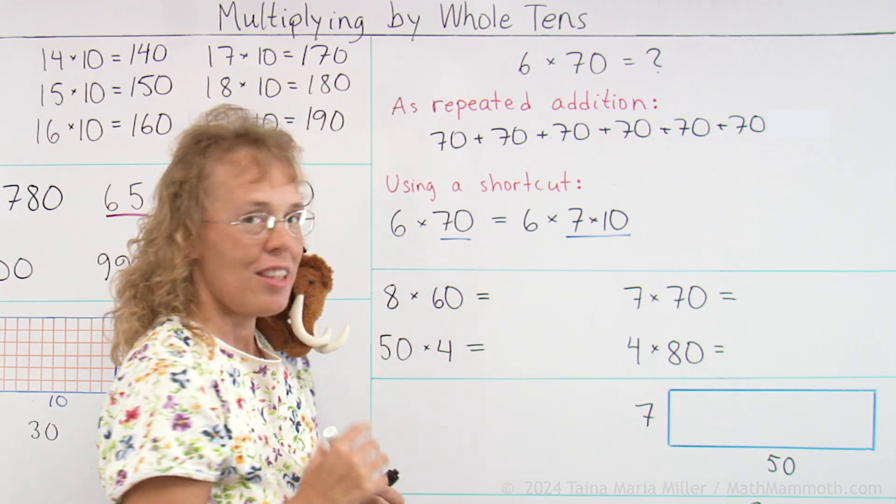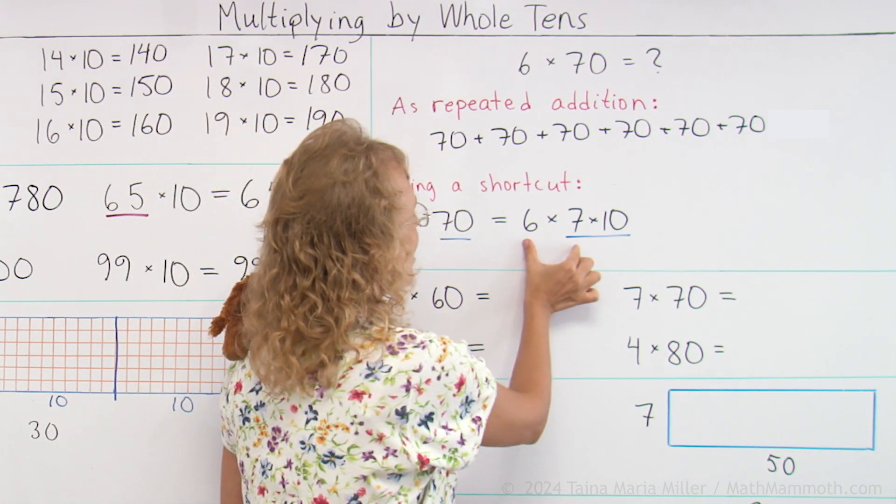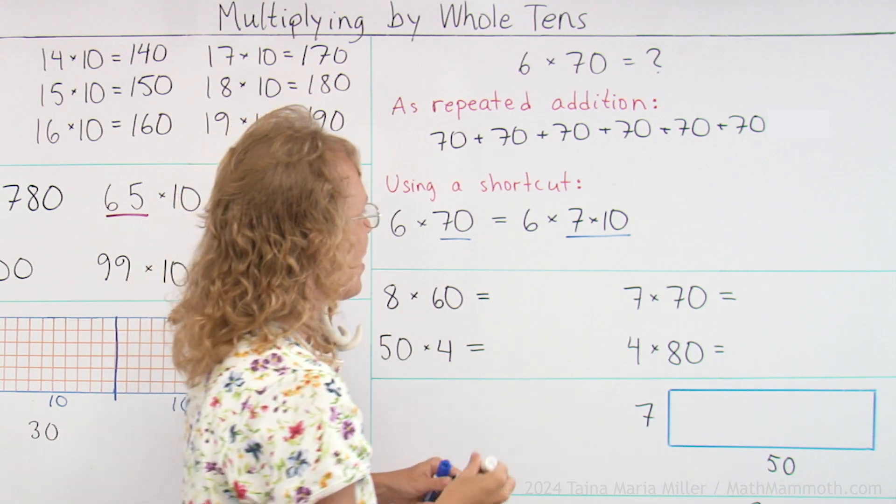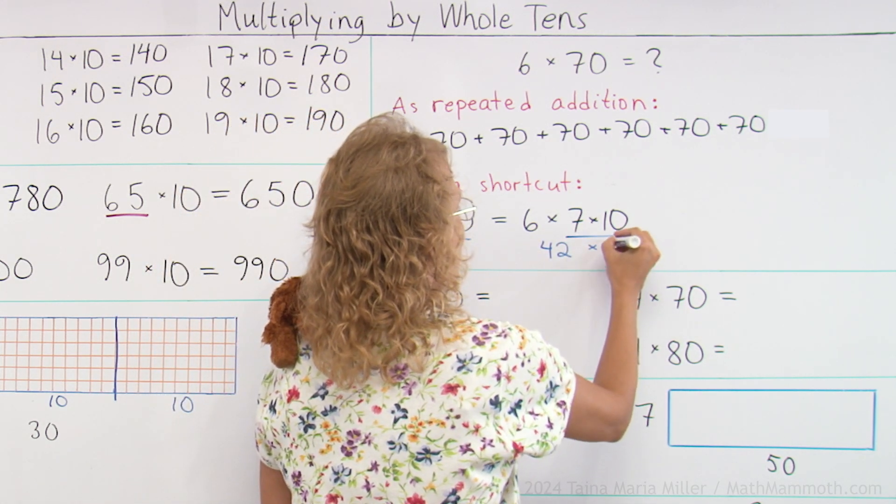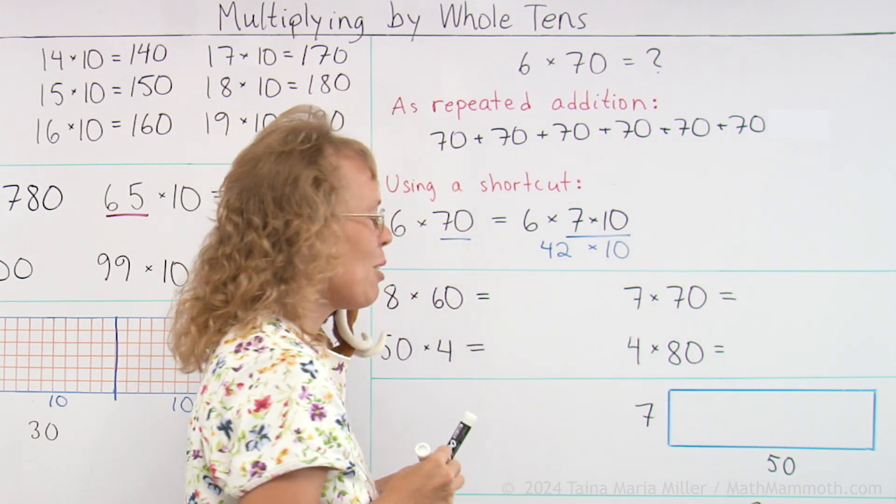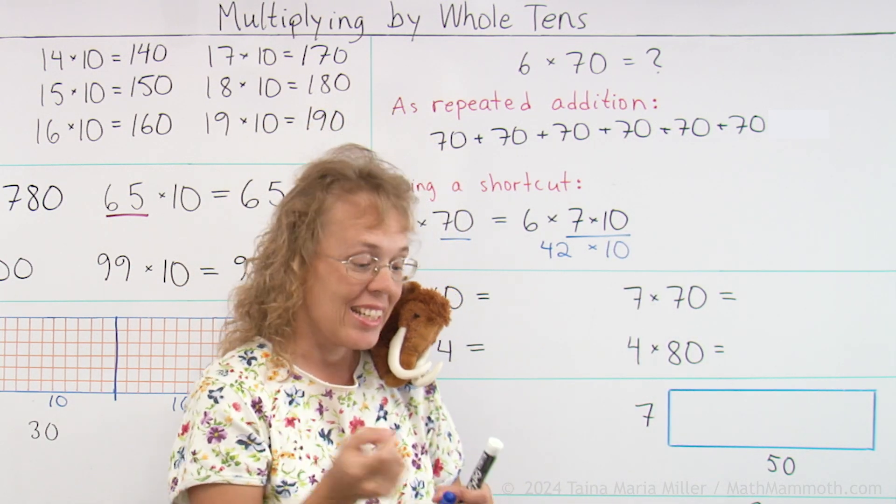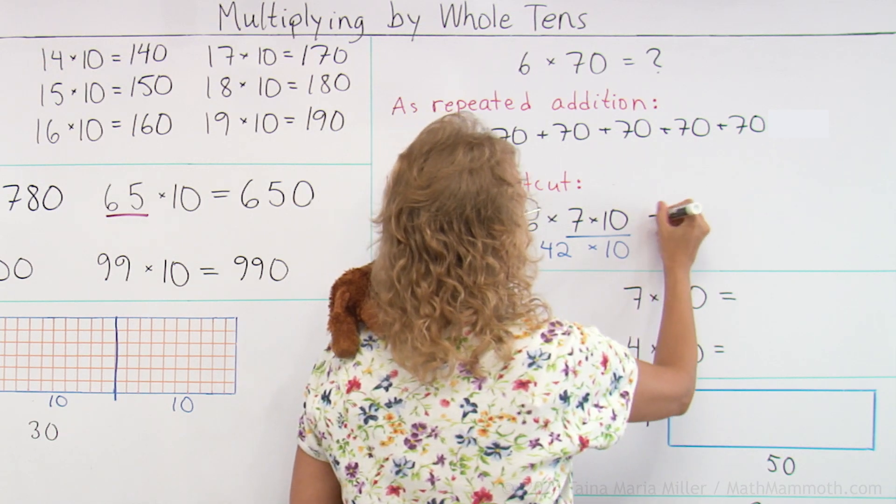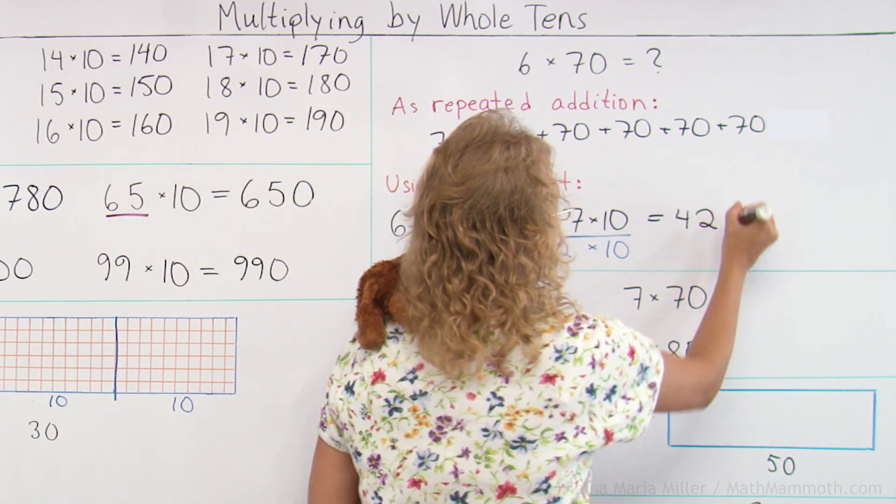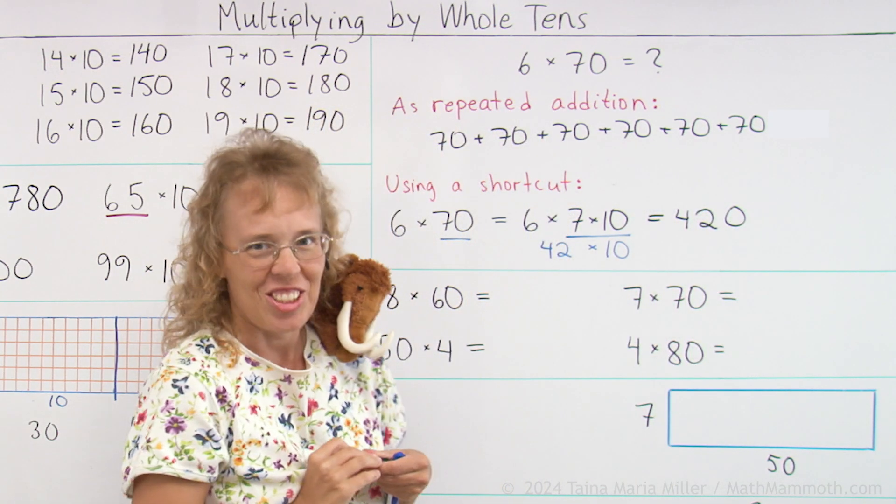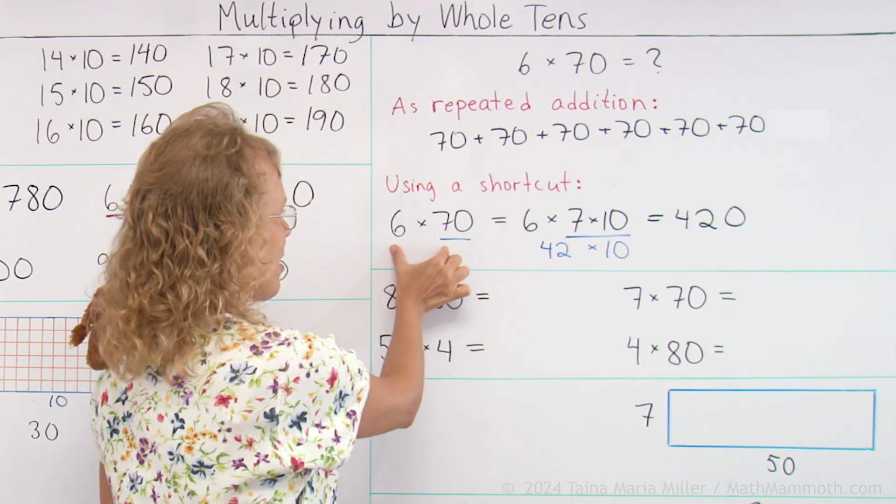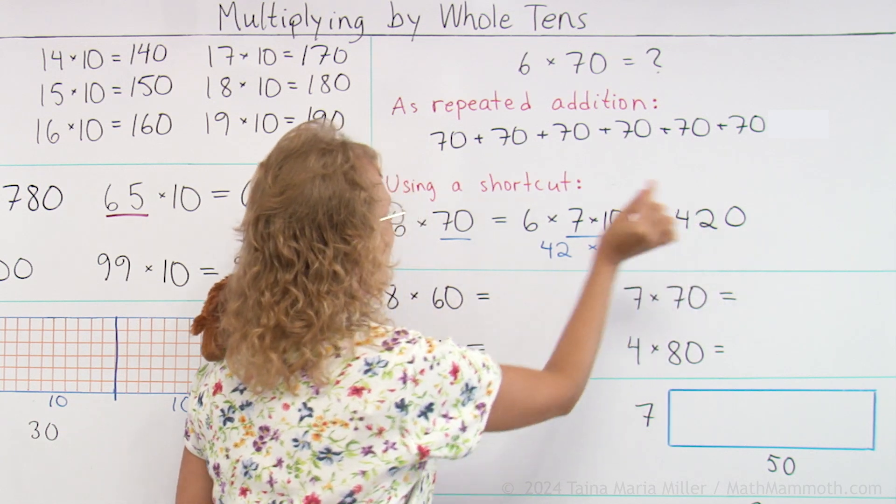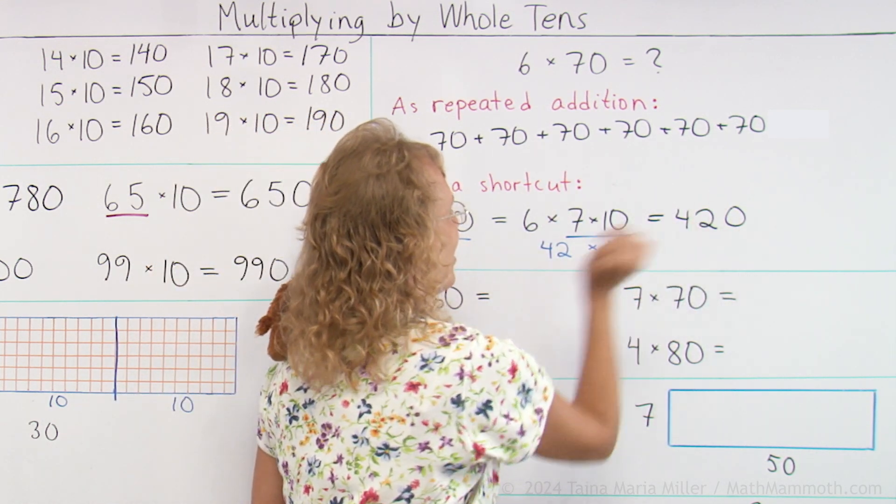And that is that I take this 70 and think of it as 7 times 10. And now in this multiplication, I will multiply 6 times 7 first. That's 42, right? So I will get 42 times 10. And now we have a shortcut for multiplying by 10, remember? I just write 42 and a 0 after it. So that's a really neat shortcut. You have 6 times 70. Just multiply 6 times 7. 42. And then tag this 0 in the end.